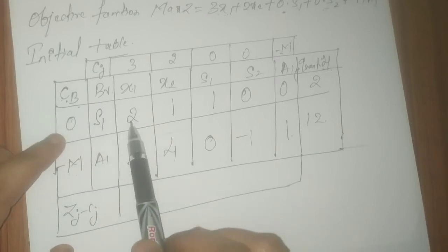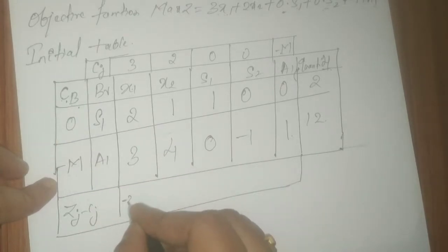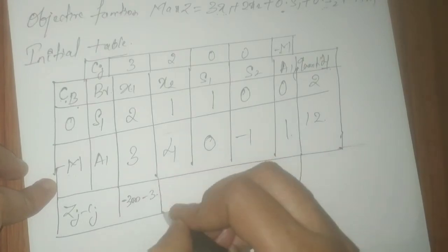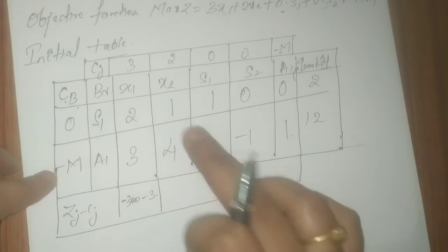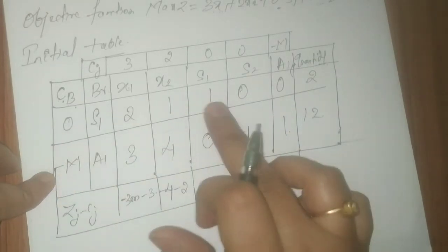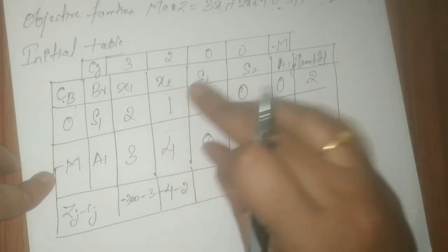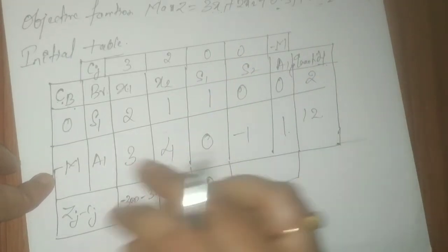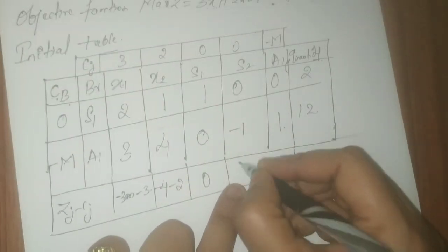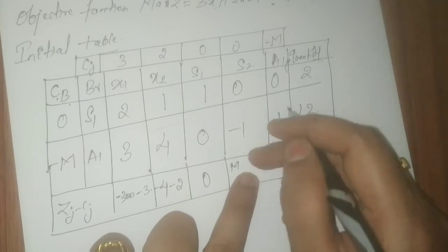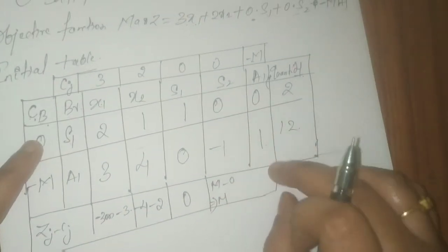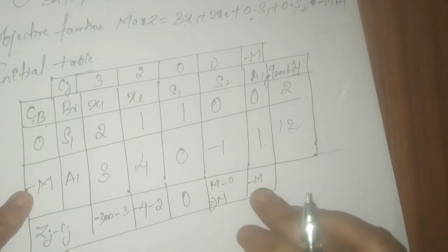For the x2 column: 0 times 1 is 0, minus M times 4 gives minus 4M. Subtracting cj of 2: the result is minus 4M minus 2. For s1: 0 times 1 is 0, minus M times 0 is 0; subtracting cj of 0 gives 0. For s2: 0 times 0 is 0, minus M times minus 1 gives plus M; subtracting cj of 0 gives M. For a1: 0 times 0 is 0, minus M times 1 is minus M; applying the minus in the formula gives plus M, and subtracting 0 gives 0.